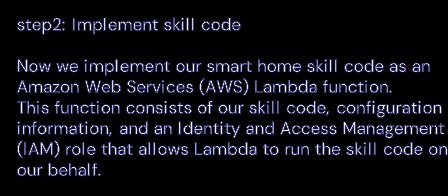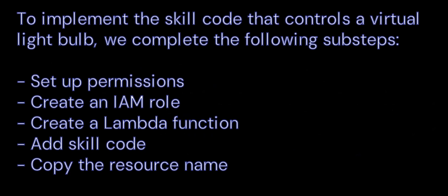Step 2: Implement Skill Code. We implement our Smart Home Skill Code as an Amazon Web Services (AWS) Lambda function. This function consists of our skill code, configuration information, and an Identity and Access Management (IAM) role that allows Lambda to run the skill code on our behalf. To implement the skill code that controls a virtual light bulb, complete the following sub-steps: Set up Permissions, Create an IAM role, Create a Lambda function, Add Skill Code, Copy the Resource Name.